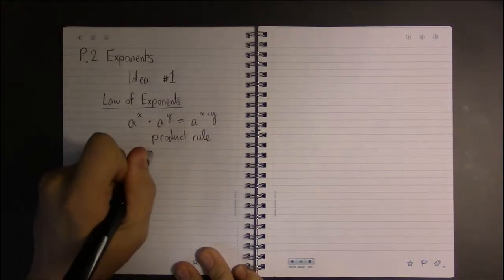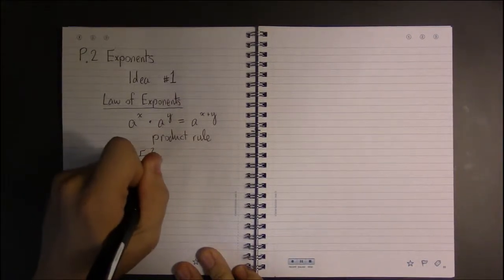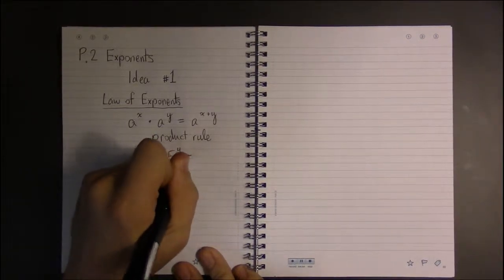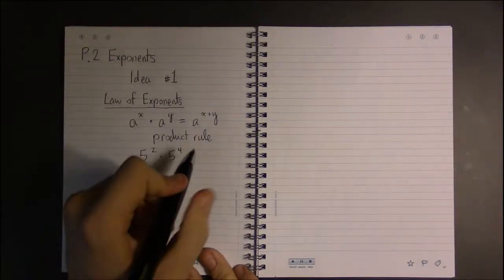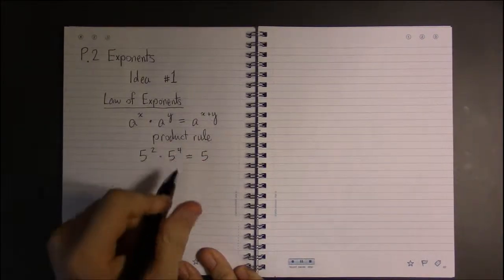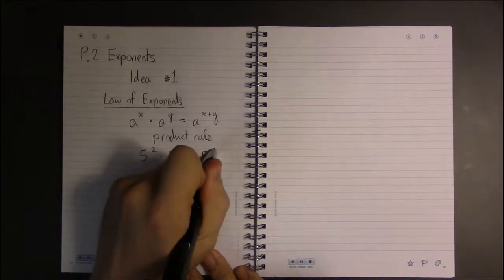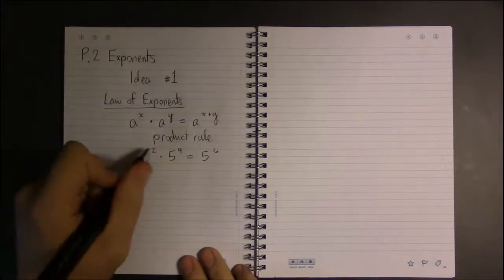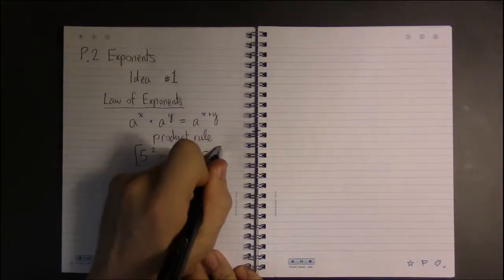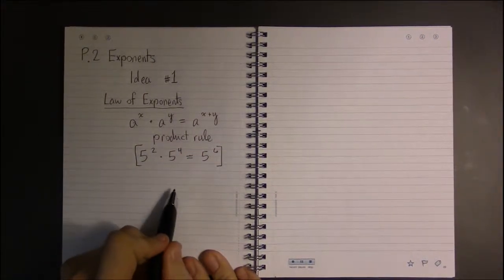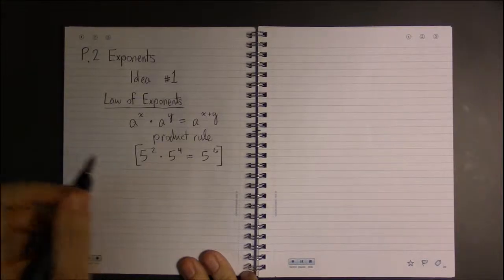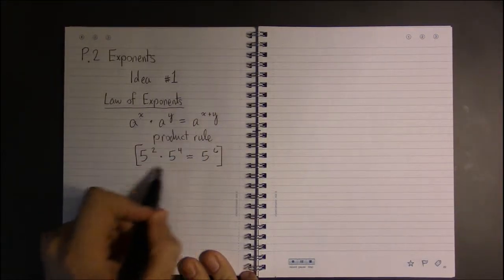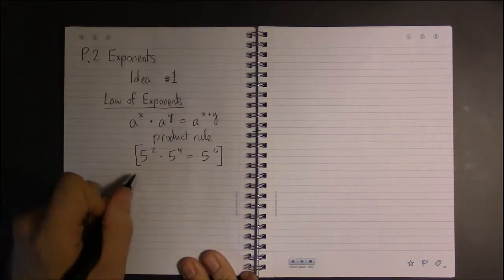So say if we were counting by fives and we did two steps and then we did four steps, well that's the same thing as taking six steps in the same system that counts by factors of five. Now remember back in the motivation video, which is where all these kind of ideas easily come from.